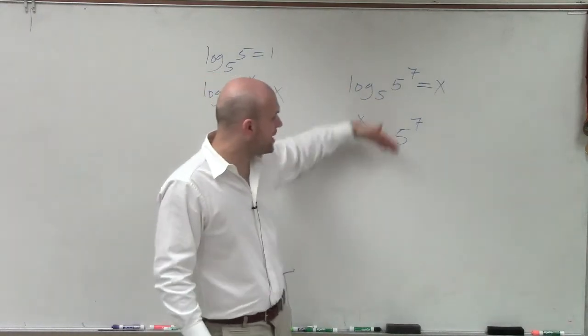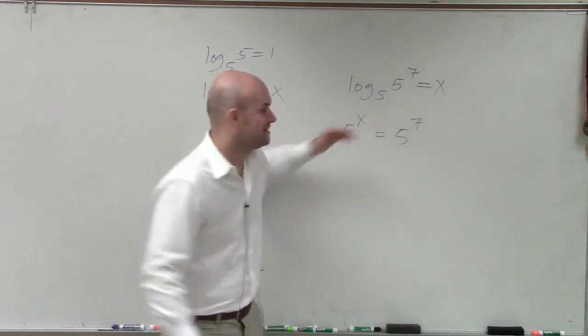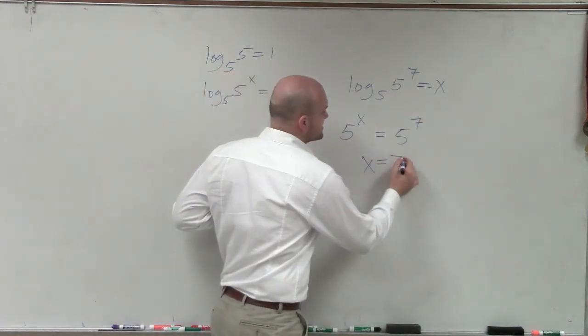by using my one-to-one property of exponential equations, you can see that if I have the same base, therefore my exponents are now going to equal each other. So therefore, I know that x is equal to 7.